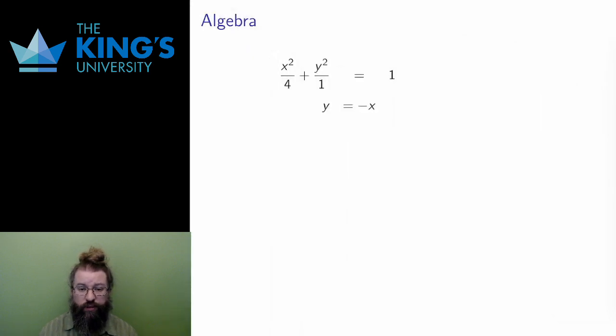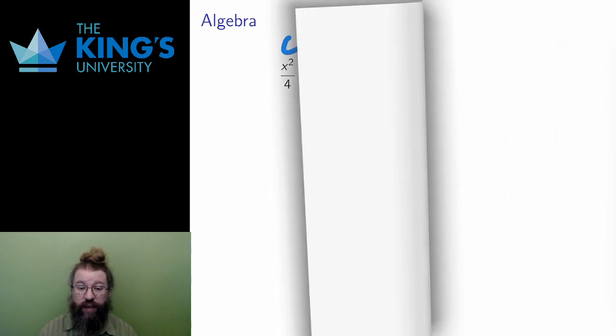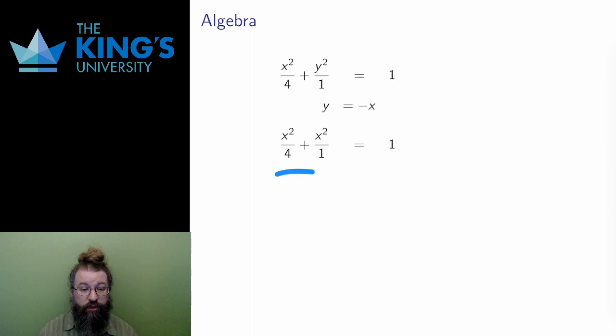Here are the two equations. In the second, the variable y is already isolated, so I can replace y with negative x in the first equation. Doing so produces this equation, since the square of negative x is the same as the square of x. Then I can add to the left side to get 5x squared over 4.